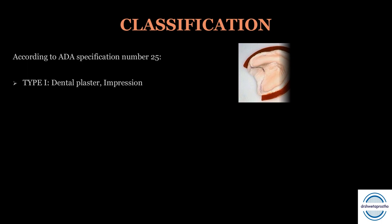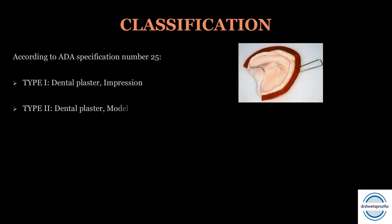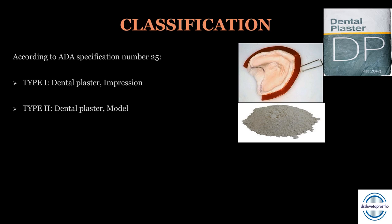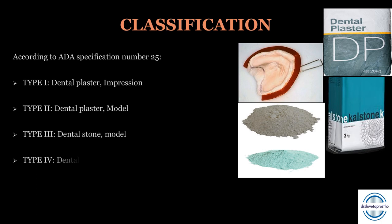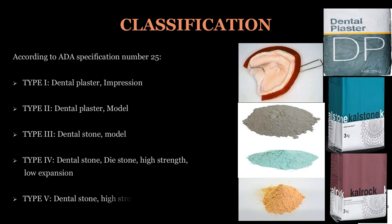Classification of gypsum: according to ADA specification number 25, gypsum is classified into five types. Type 1: dental plaster impression — used for impressions, a rigid inelastic material. Type 2: dental plaster model — used for study models and mounting. Type 3: dental stone model — higher strength than type 2, used for final casts. Type 4: improved stone, also called die stone — used to prepare dies, with high strength and low expansion. Type 5: dental stone with high strength and high expansion.